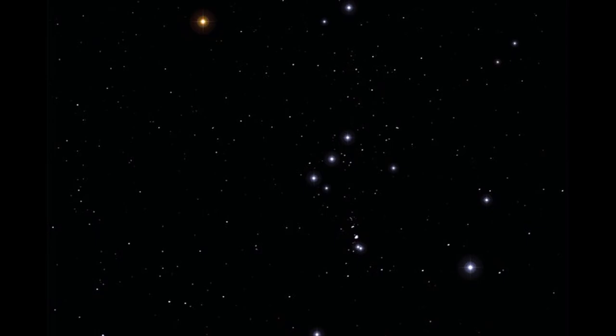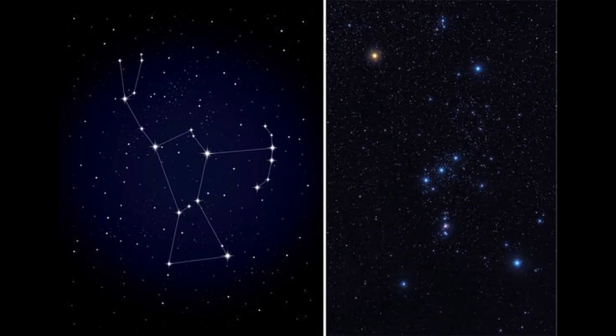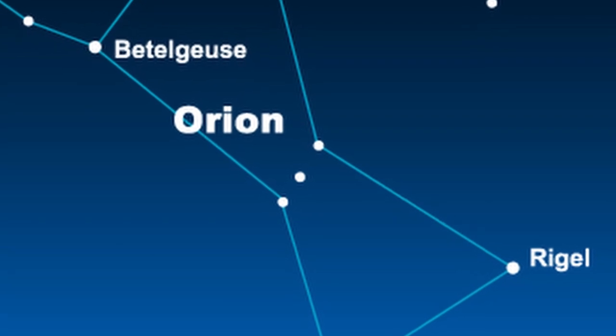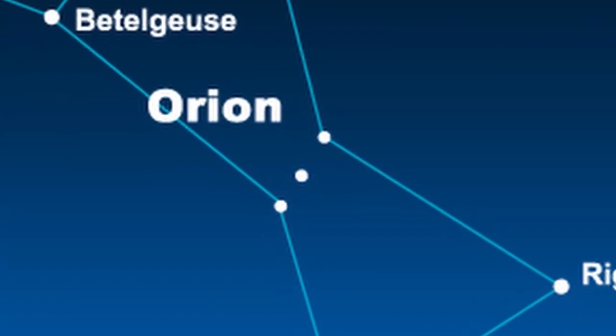First, let me tell you how to identify Orion in the night sky. Orion is the constellation which is impossible to miss even if you are not a stargazer. Go up to the terrace tonight and look at the sky — see if you can spot these three stars in a straight line. These three stars are called the belt of Orion. The entire constellation looks like a hunter with his bow raised, and the three stars are positioned in the region of his belt.